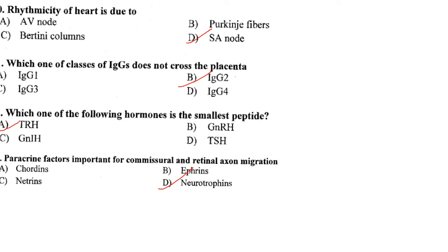Paracrine factors important for commissural and retinal axon migration are neurotrophic. When proteins synthesized by one cell diffuse over small distances to induce changes in neighboring cells, the event is called paracrine interaction and the diffusible proteins are called paracrine factors or growth and differentiation factors. Answer is option D.